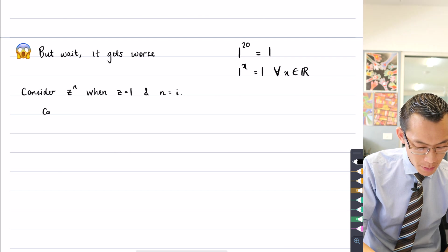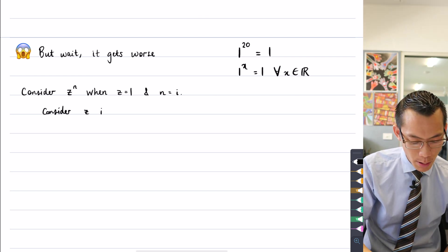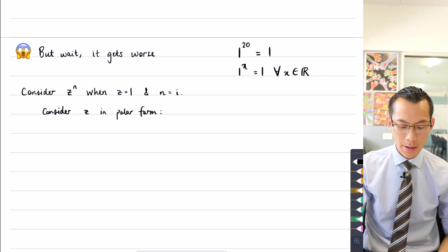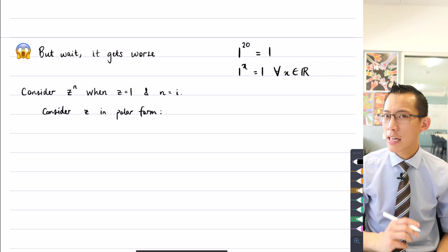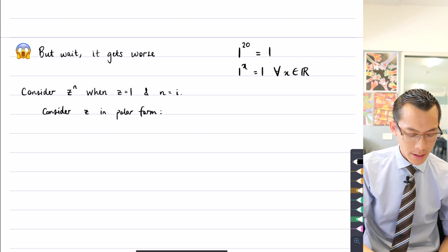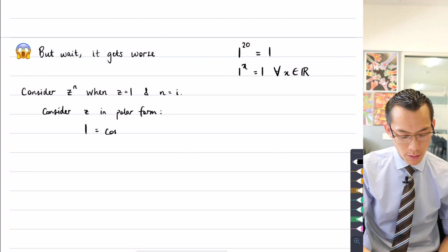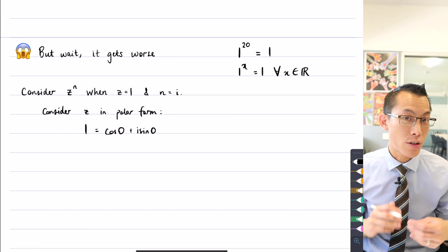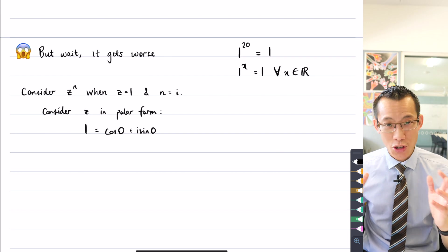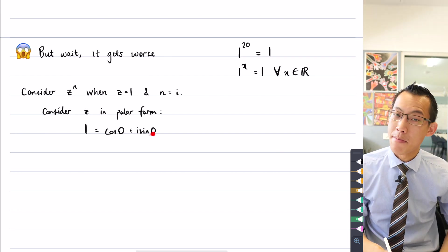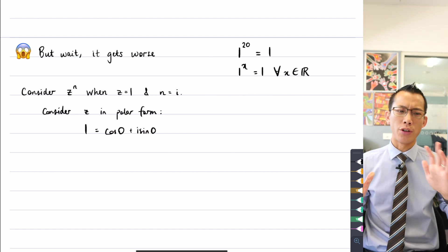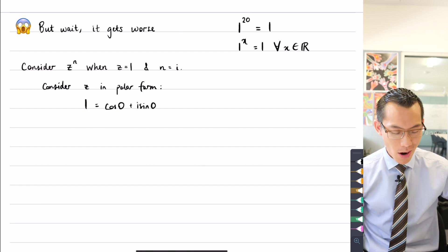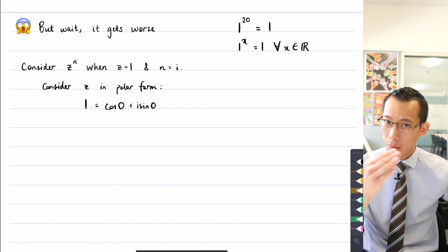So if I write z in polar form, like I saw earlier, this is a modulus of one and it's going to be an argument of, well let's take the principal argument just to start with. That's going to be one being equal to cos of zero plus i sine of zero. So this is kind of like your stock standard way to write one with the trigonometric terms to give you the real component and the imaginary component. So far so good but kind of like I sort of alluded to, I've just taken the principal argument.